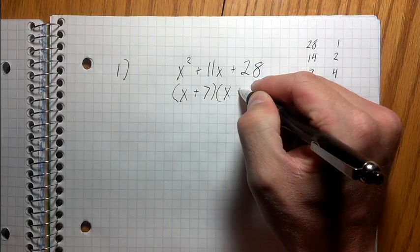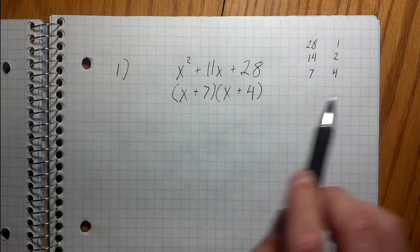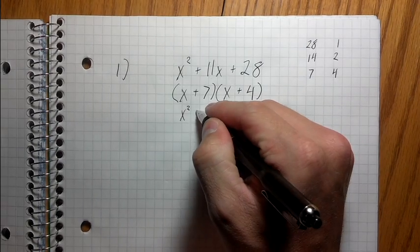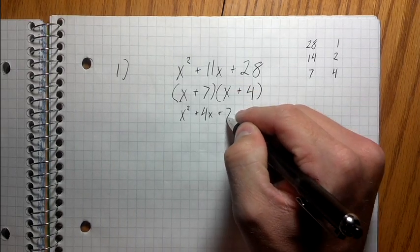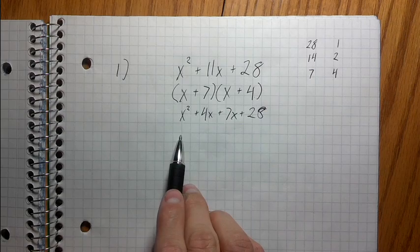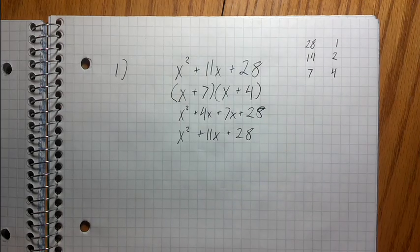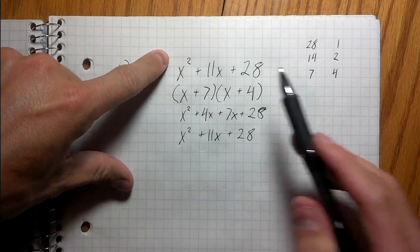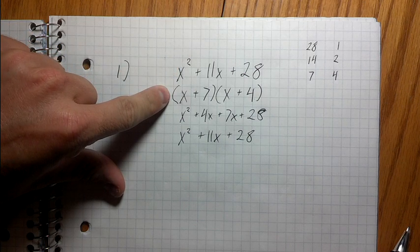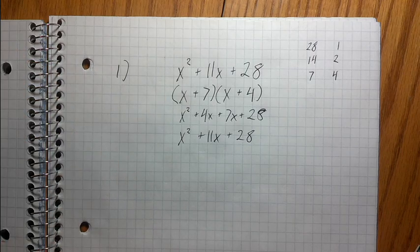So I'm going to put positive 7 and positive 4 right here, and that's my answer. I can check myself by doing FOIL: x times x gives x squared, x times 4 gives 4x, 7 times x is 7x, 7 times 4 is 28. Combining like terms gives x squared plus 11x plus 28 — the same thing we started with. This is the multiplied-out form; that's the factored form. I can go backwards and forwards — I'm just doing reverse FOIL when I'm factoring.